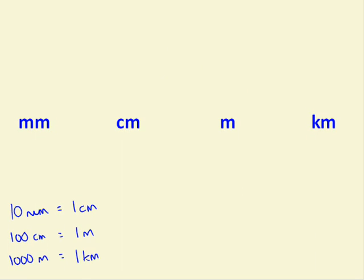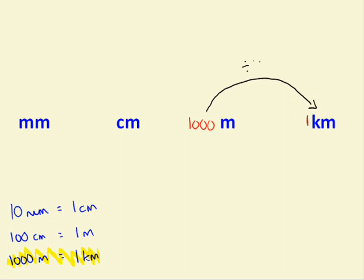So, how do we convert between these? First off, I'll consider metres to kilometres. In 1 kilometre there is 1000 metres. So, to convert from metres to kilometres — to get from 1000 to 1 — what we have to do is divide by 1000. To convert from kilometres to metres, to get from 1 to 1000, we multiply by 1000.